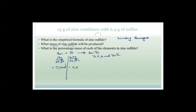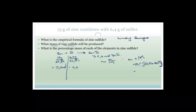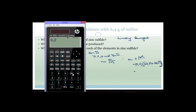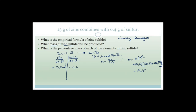Now we want to know the mass. Mass equals number of moles times molar mass. Number of moles is 0.2, multiplied by the molar mass of zinc sulfide, which is 65.39 + 32.07. Using the calculator: 0.2 × (65.39 + 32.07) = 19.49. So the mass is 19.49 grams.